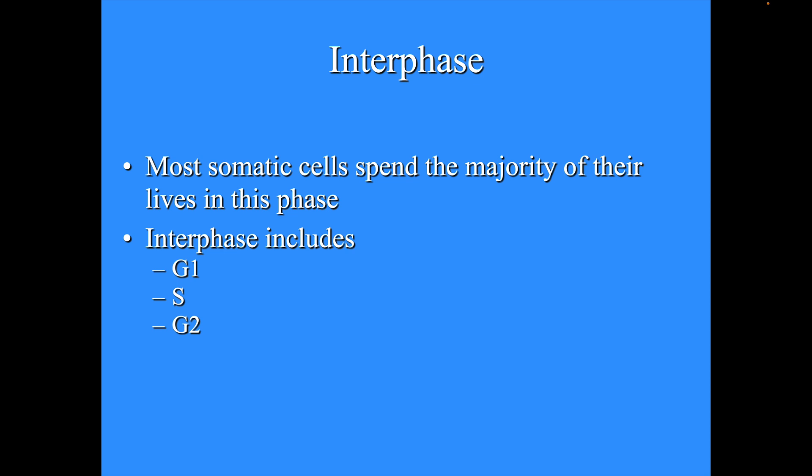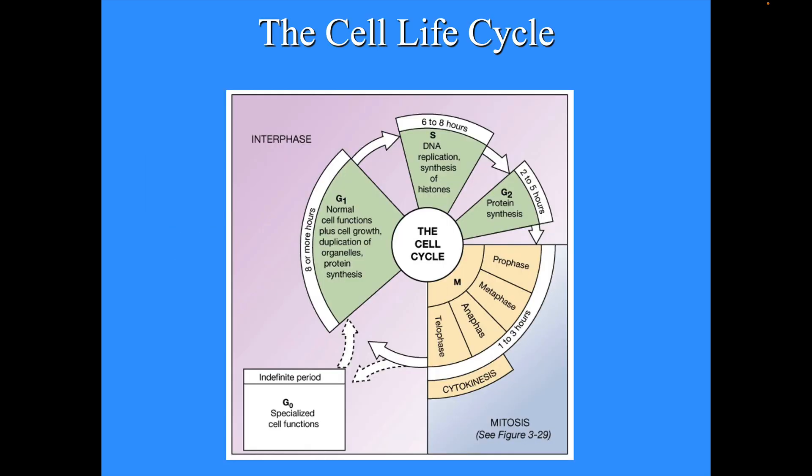Interphase is one of the phases in the cell cycle and it is the longest phase. Most somatic cells spend the majority of their lives in this phase, and this phase can be subdivided into G1, S, and G2 phases. In the cell cycle, G1 is eight or more hours, where normal cell functions are occurring — so liver cells are doing liver things, brain cells are doing brain things — plus cell growth. Also happening in G1 is the duplication of organelles and protein synthesis, which is important because the organelles are going to be split when the cell divides.